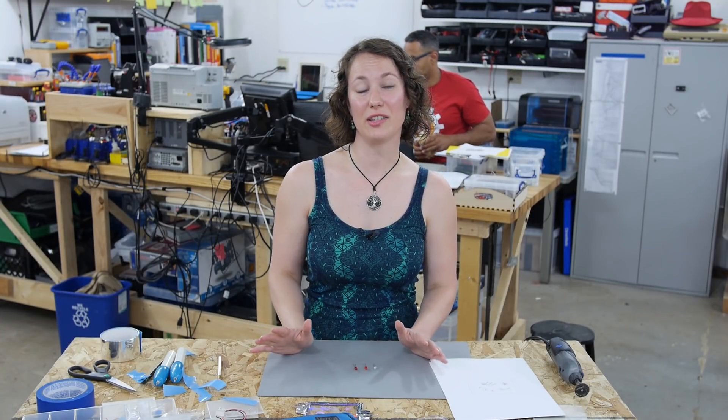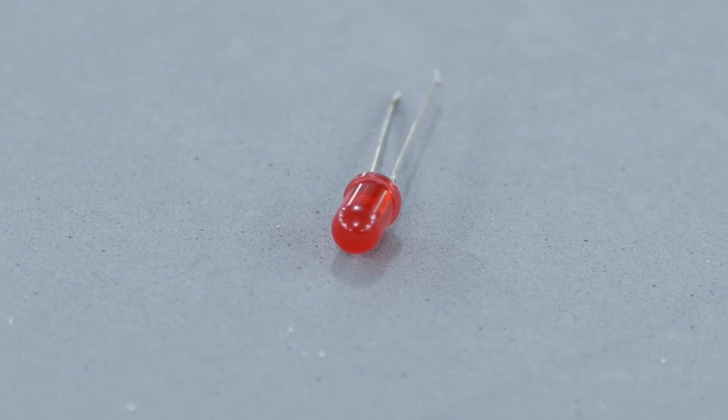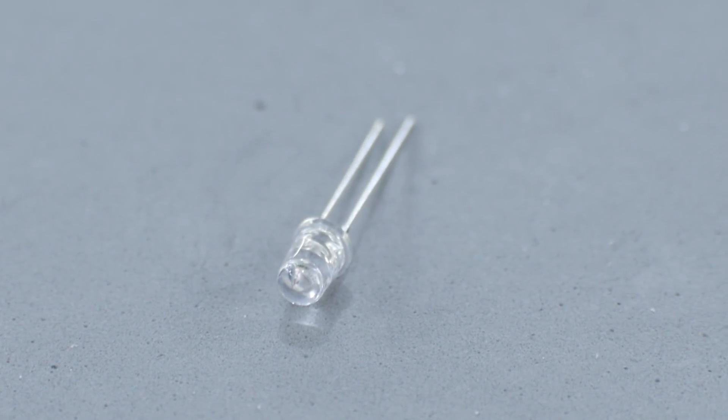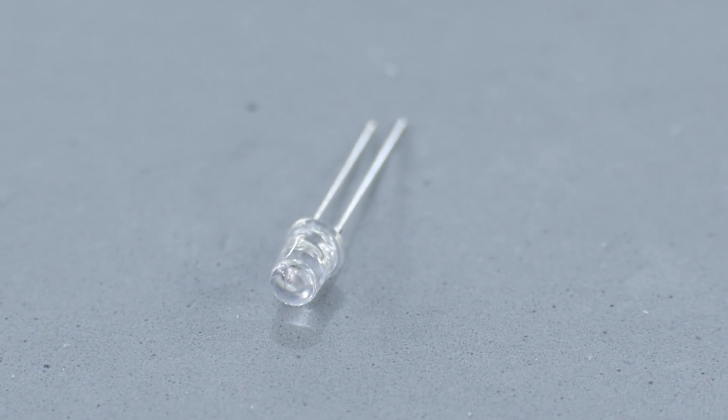When choosing your LEDs you want to be a little bit particular. This one is diffused and therefore doesn't let as much light through. This one is colored and is pretty good but the clear red one is really the best because it lets the most light through so that it can get to your design.